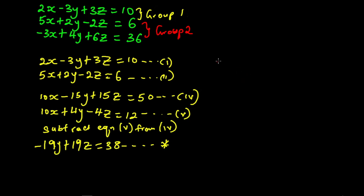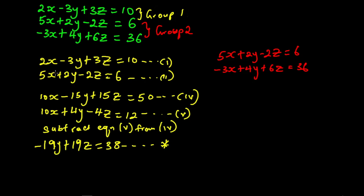From group 2 we have 5x plus 2y minus 2z equal to 6, and minus 3x plus 4y plus 6z equal to 36. Since we eliminated x first from group 1, we will also eliminate x first from group 2. This is equation 2 and this is equation 3. We equate the coefficients of x.